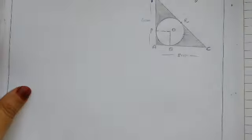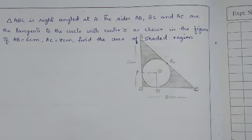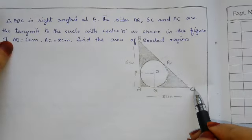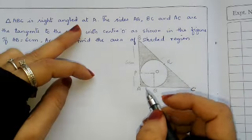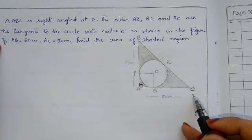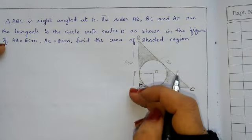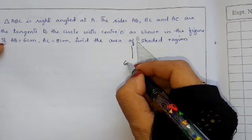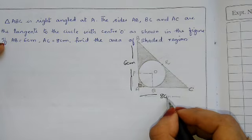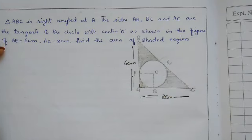Now the next question. Triangle ABC is a right angle triangle, right angled at A. The sides AB and AC are tangents to a circle, as shown in the figure. AB is 6 cm and AC is 8 cm. Find the area of the shaded region.